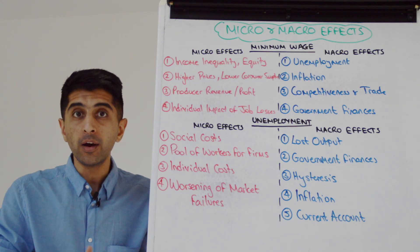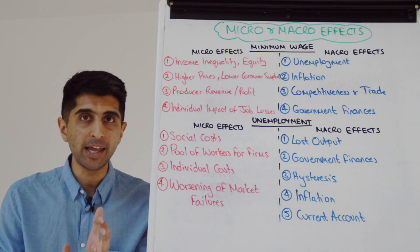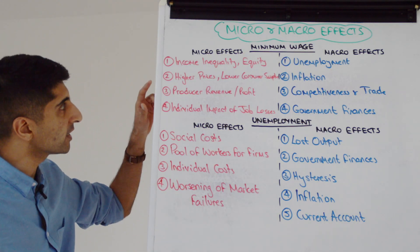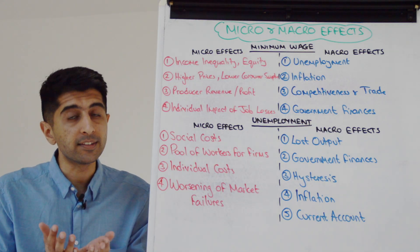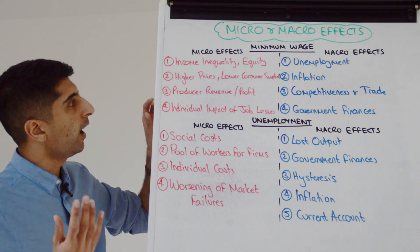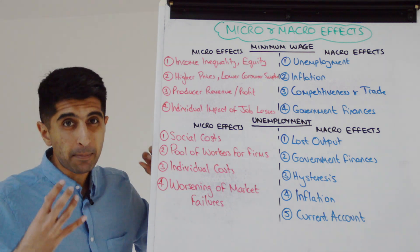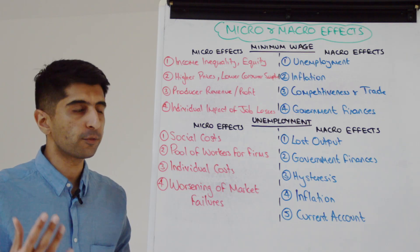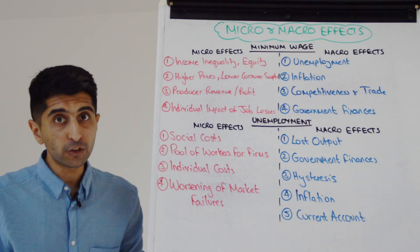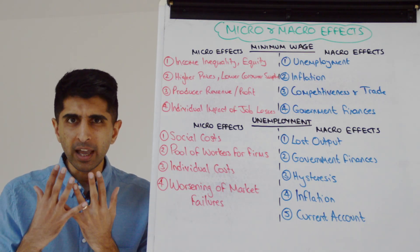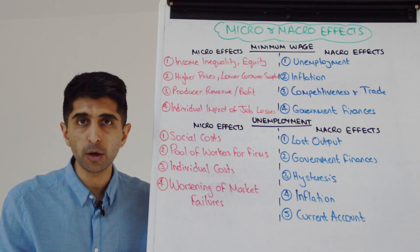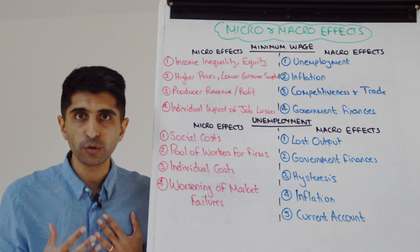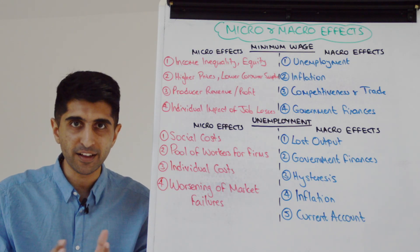We can talk about how a minimum wage can deal with income inequalities, market failure, and promote equity — clear micro effects. We can talk about the potential higher prices and therefore lower consumer surplus from the impact of a minimum wage, the impact on producer revenue and profit, especially as they absorb higher costs of production. We can also talk about the individual impact: workers losing their jobs, being replaced by capital machinery, the impact on individuals' living standards and family outcomes.